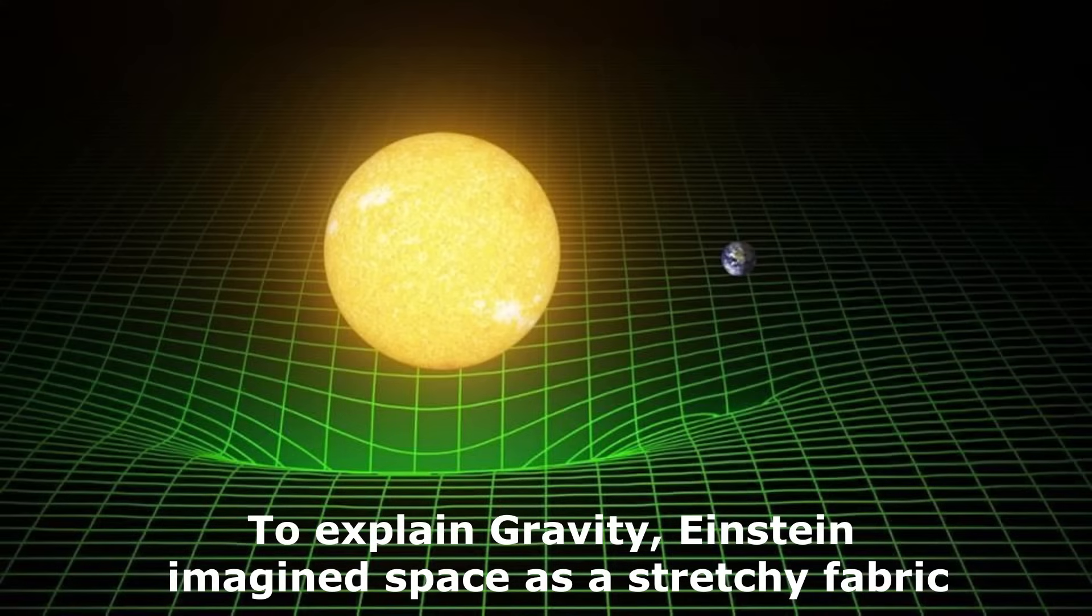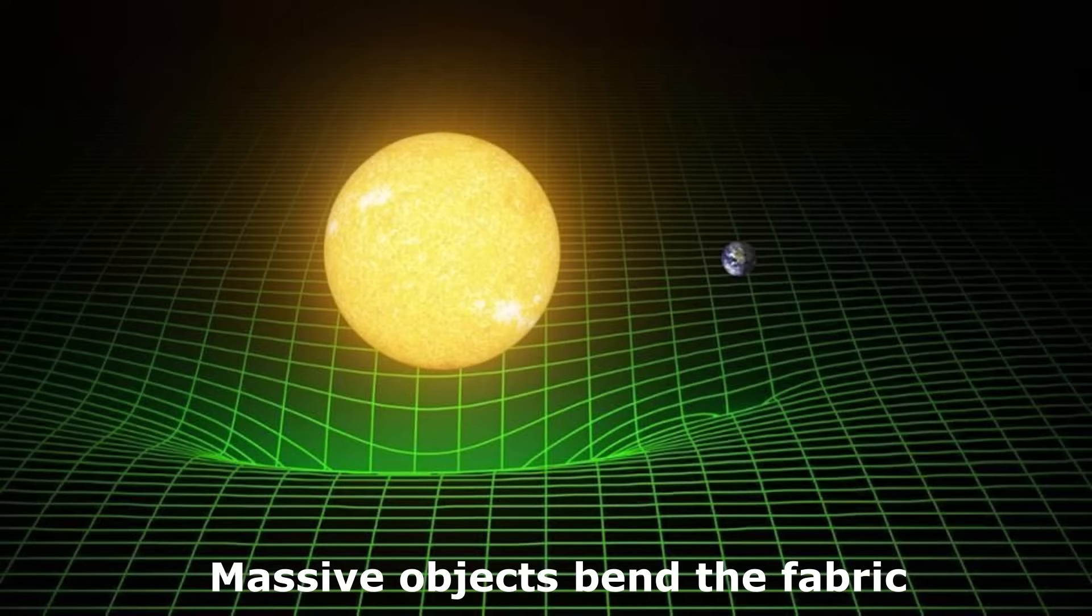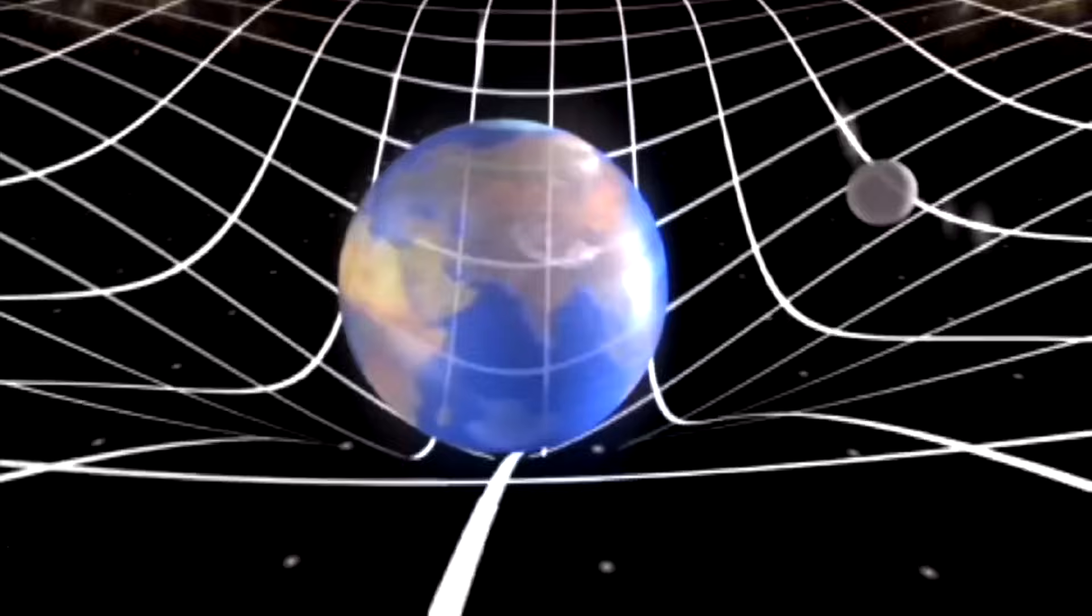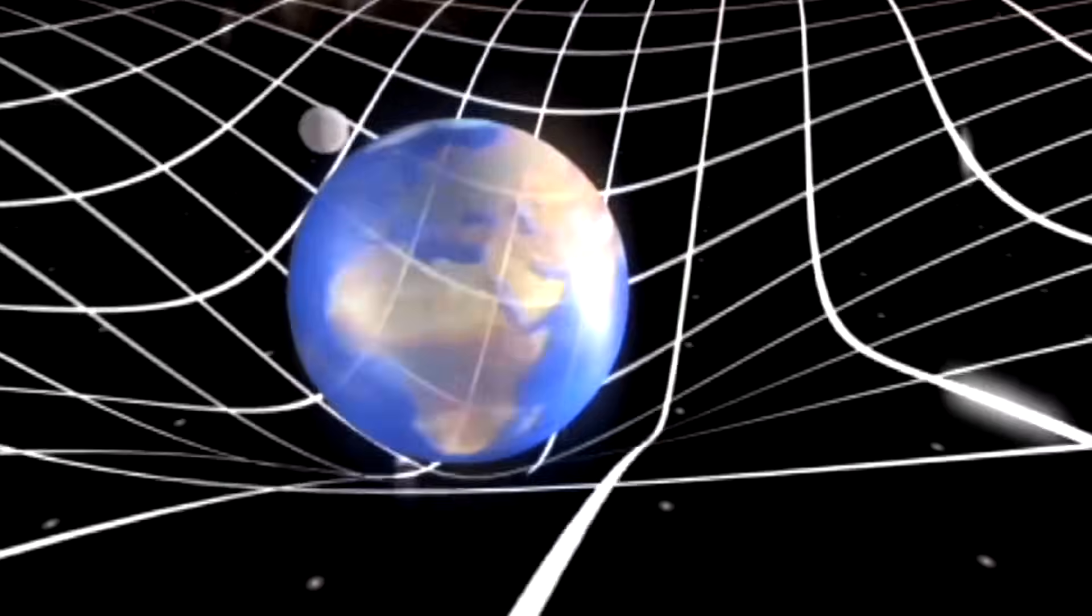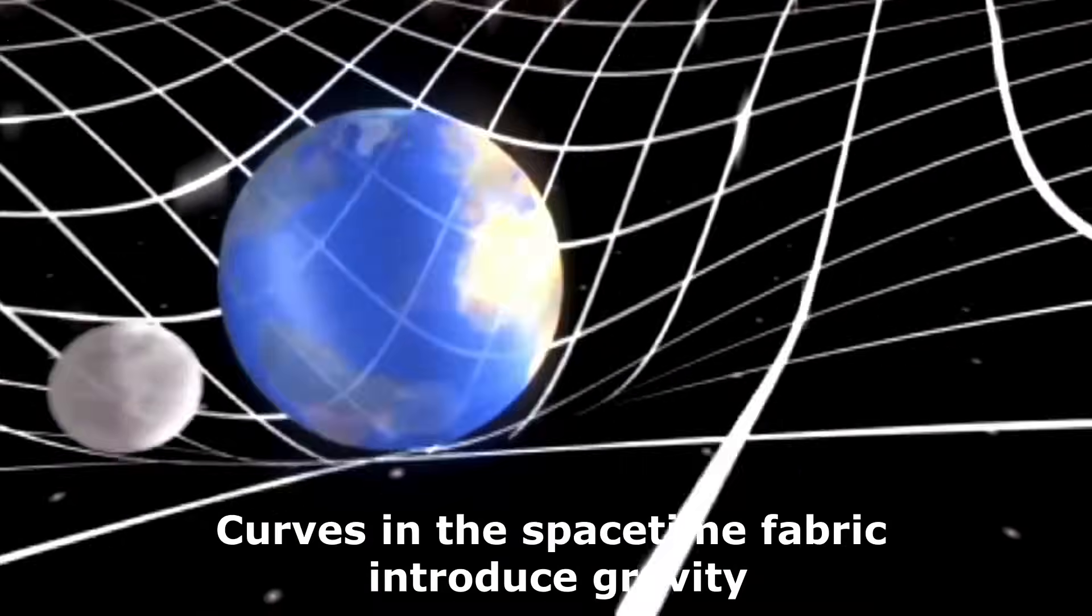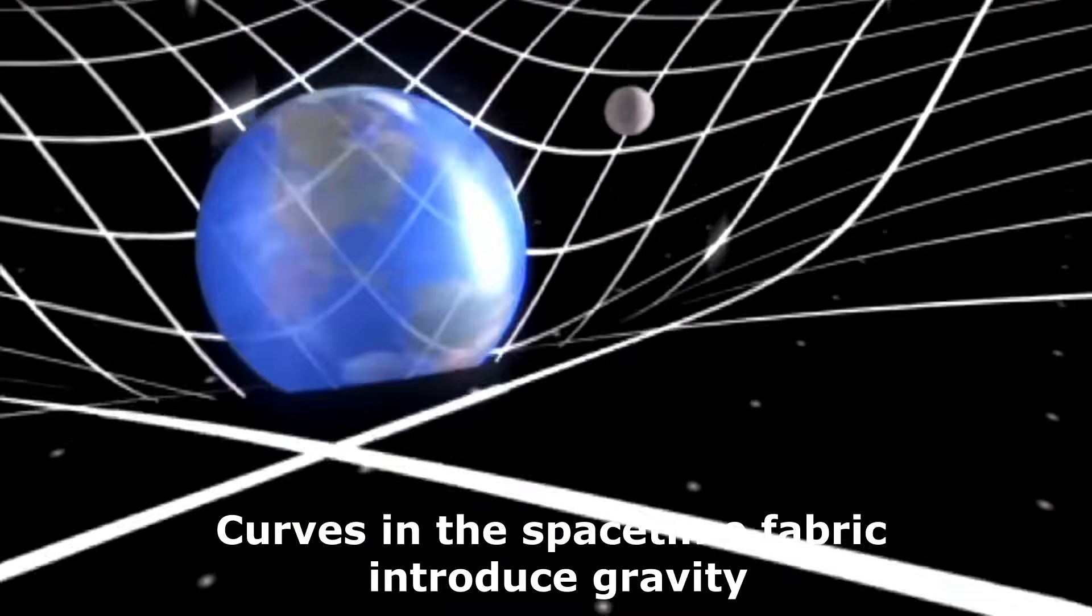To explain gravity, Einstein imagined space as a stretchy fabric. Massive objects such as planets and stars would bend the fabric of space. These curves in the space-time fabric introduce gravity.